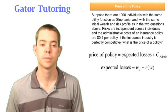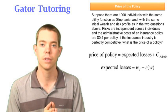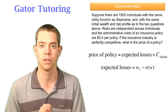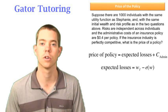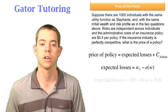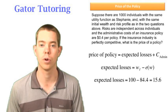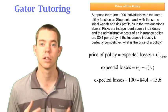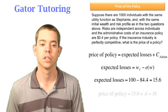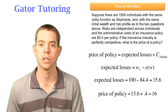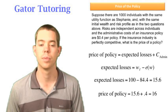Well, the expected losses is how much do we start out with and how much do we expect to have at the end of the year? So we start out with our wealth initial, which is $100. We expect to have at the end of the year, our expected wealth, which was $84.4. So our expected losses is $15.60. To find the price of the policy, we're going to add $0.40 to that and we see that the price of the policy is $16.